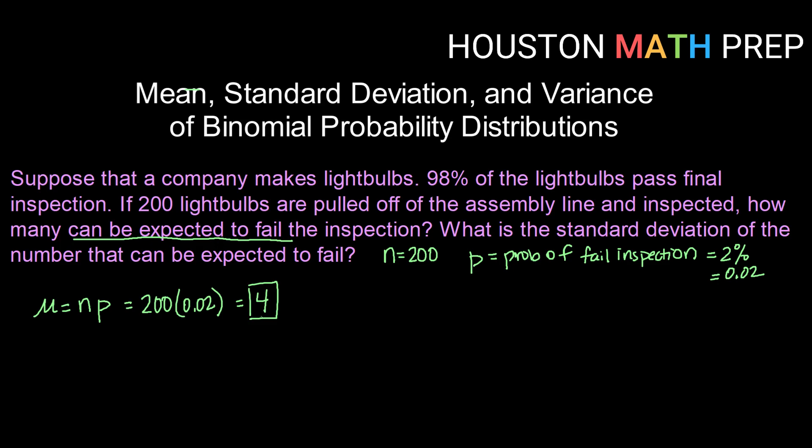And also we want to know what is the standard deviation of the number that can be expected to fail. Now, to get standard deviation, we really have to go through variance. So thinking about sigma is the square root of sigma squared, that will be the square root of n times p times q.